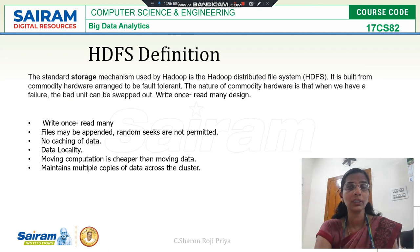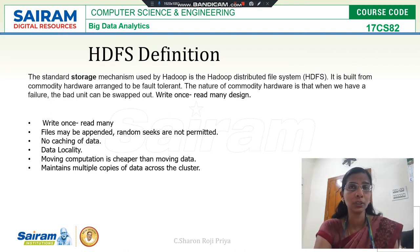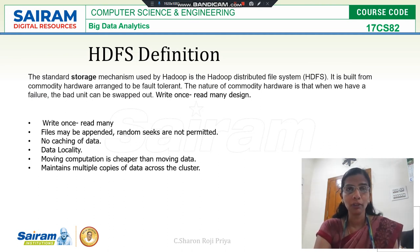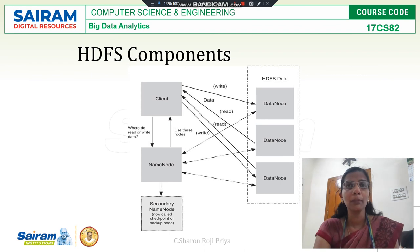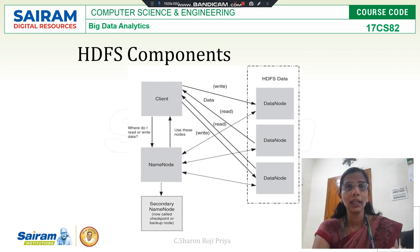Hadoop has two parts: the storage part and the processing part. The storage part is implemented with the Hadoop Distributed File System, which follows GFS — Google File System. Coming to the HDFS components, there are two main components: the name node and the data node.